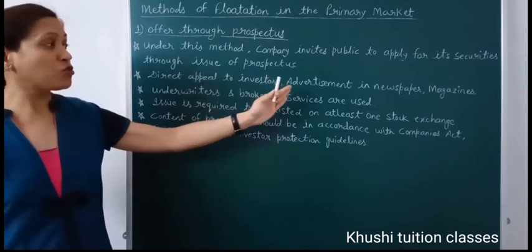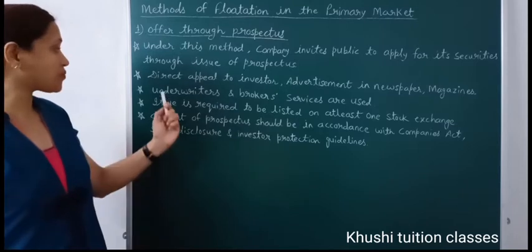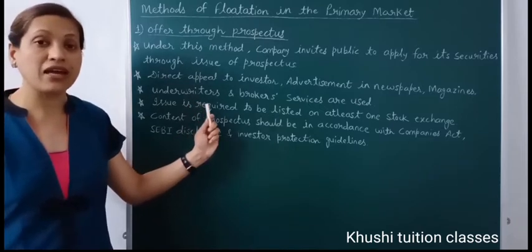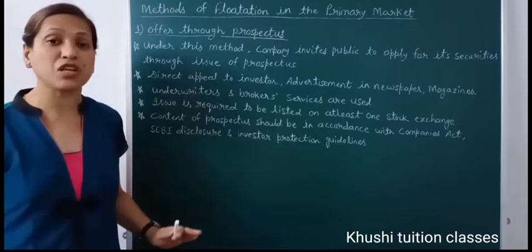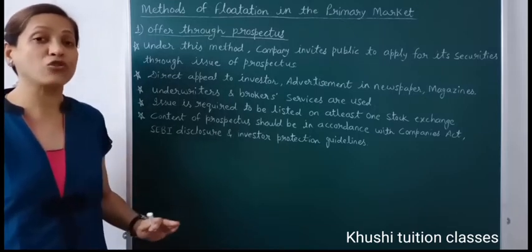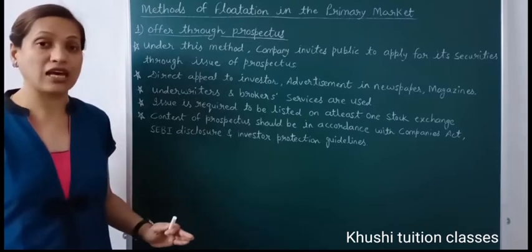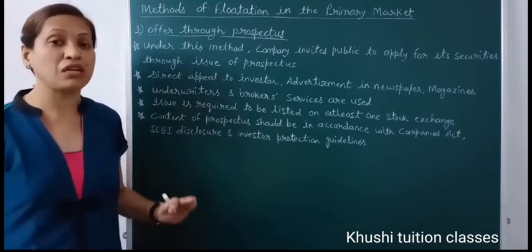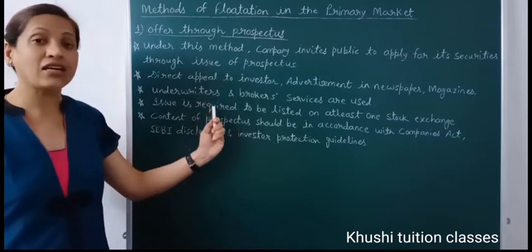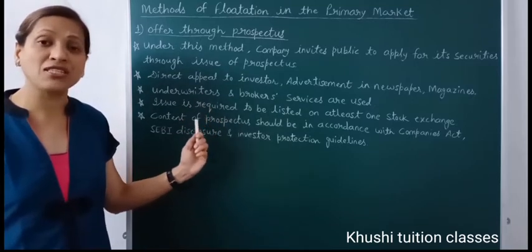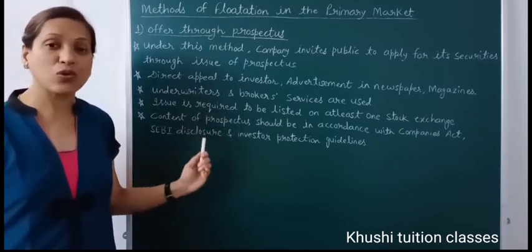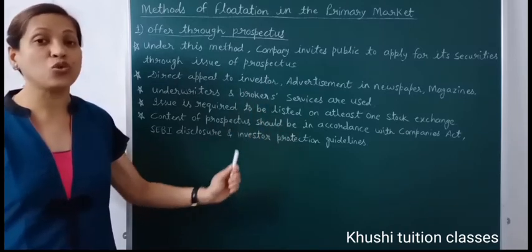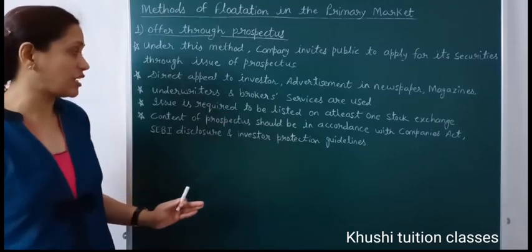The company publishes its prospectus and invites the public to subscribe to its shares. Underwriters and broker services are used. A company must achieve a minimum subscription of 90%; if not, the issue is cancelled and the company faces heavy losses. To avoid this, the company appoints underwriters who, as per their undertaking, purchase the company's shares if the minimum subscription is not met, thus saving the issue from cancellation. The company also appoints brokers as intermediaries through whom investors can subscribe to the company's securities.